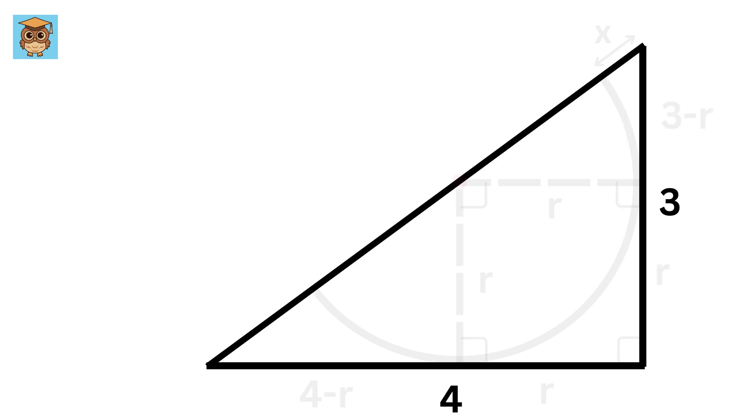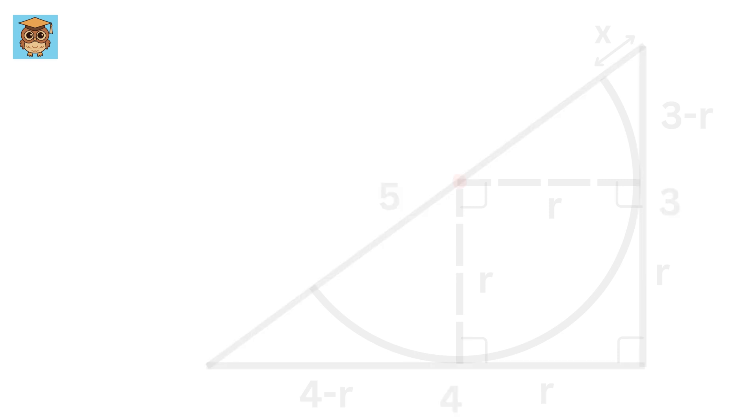Now, we know that this hypotenuse will be of length 5, as this is the 3, 4, 5 right triangle.